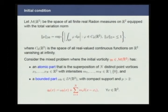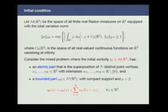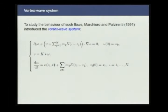In this work, we're interested in a special measure-valued solution. Let M be the space of real random measures. We're interested in the problem where the initial condition Q0, belonging to M, has an atomic part which is the superposition of a finite number of point vortices with intensities M_i, and a bounded part which is compactly supported, omega_0, that belongs to L^p with p bigger than 2.